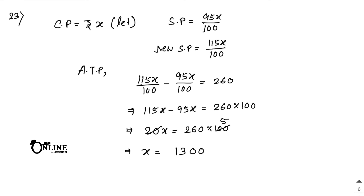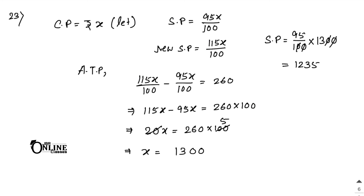Now find the selling price: SP equals 95 by 100 into 1,300. Cancelling zeros: 95 into 13 equals 1,235. So 1,235 is your answer.